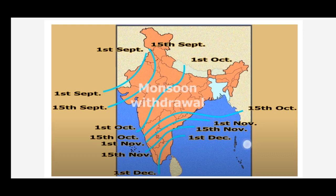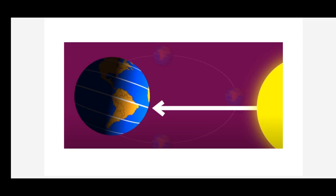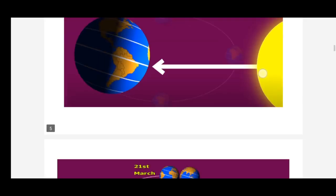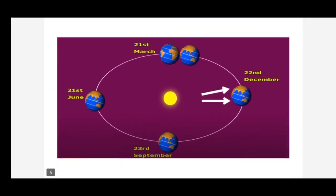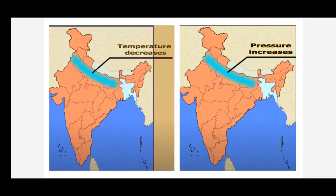Coming back to the rotation and revolution of the earth: on 23rd September, the rays of the Sun fall directly on the equator, so the planet Earth will have equal day and night. But from 23rd September onwards, the southern hemisphere is tilted towards the Sun and receives vertical rays, whereas the northern hemisphere — where India lies — receives oblique or slanting rays. So the night becomes longer and the days become shorter, giving rise to winter conditions in the northern part of India.